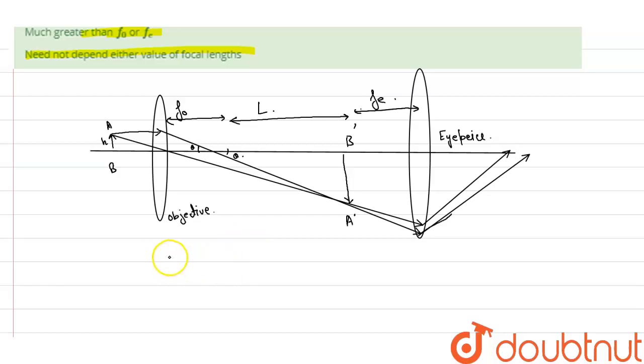So what is this magnification? This magnification is known as M0. This is equal to H dash. This height is H dash. H dash divided by the original height H.